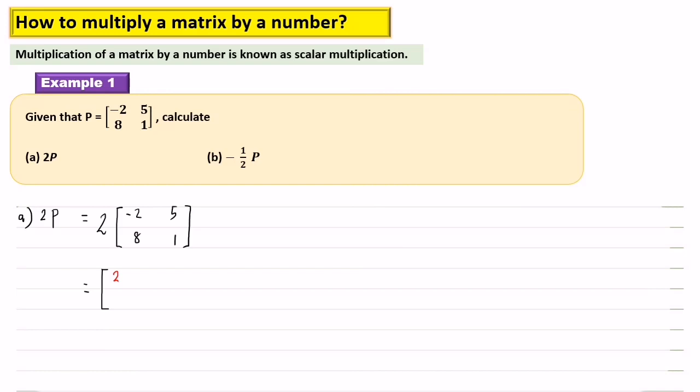So 2 times negative 2, 2 times 5, 2 times 8, and also 2 times 1. This gives us negative 4, 10, 16, 2.